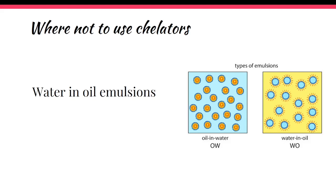In water-in-oil emulsions, we usually apply a salt — in the simplest case sodium chloride, but if you want to be more sophisticated, magnesium chloride or magnesium sulfate — to stabilize the formulation. So if you add a chelator to your water-in-oil emulsion, you are binding those metal ions, deactivating them, and accelerating the physical instability of the product. This is the only case when you have water in the formulation but do not use any chelator. Make it your mantra: water-in-oil emulsions do not need chelators.